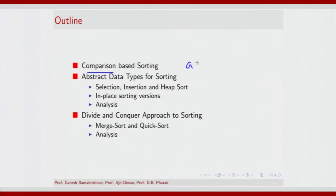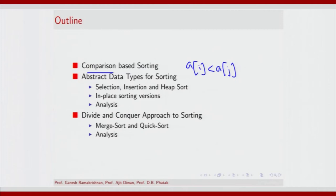Comparison in the sense that you look at the ith element of an array and compare that with the jth element of an array, and perform operations based on the outcome of this comparison. We will consider some abstract data types for sorting that build upon this comparison.